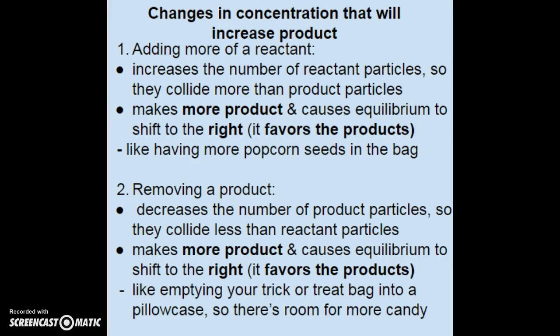Changes in concentration that increase your product: if you add more of a reactant, you will increase your product, because it increases the number of reactant particles, meaning there will be more collisions on the reactant side than the product side. That will make more product and cause the equilibrium to shift to the right. This is like having more popcorn seeds in the bag — the more seeds, the greater the chance of one popping. You can also remove a product, which decreases the number of product particles so they collide less than the reactant particles. Net product will be formed and the equilibrium will shift to the right.